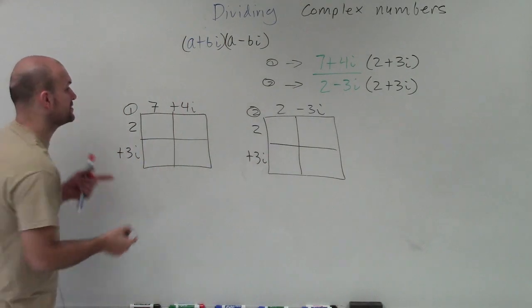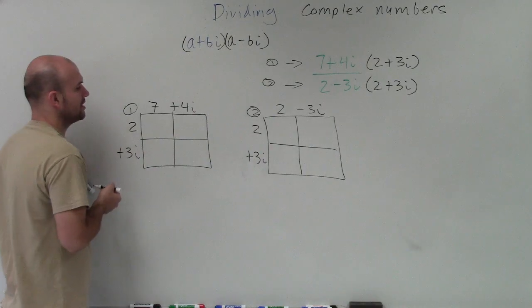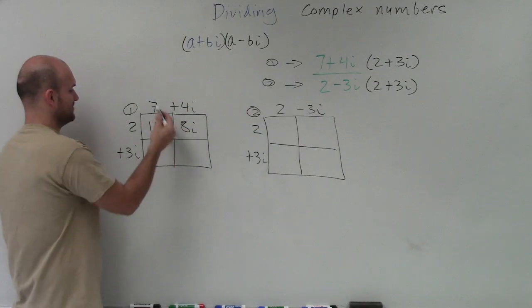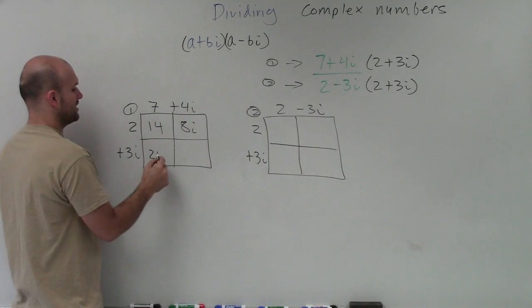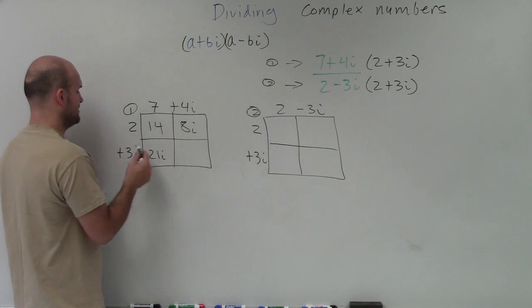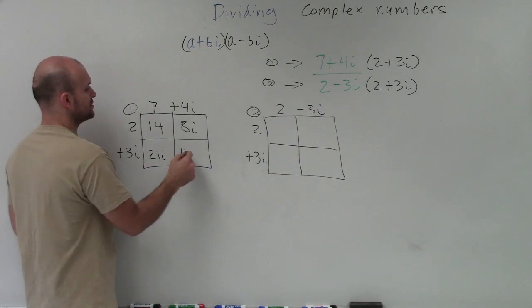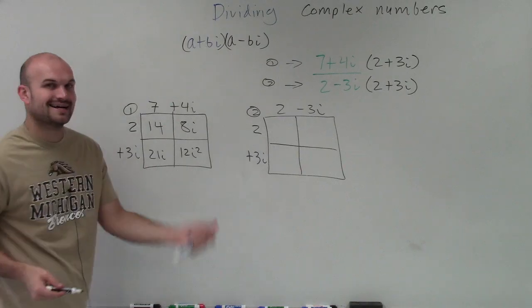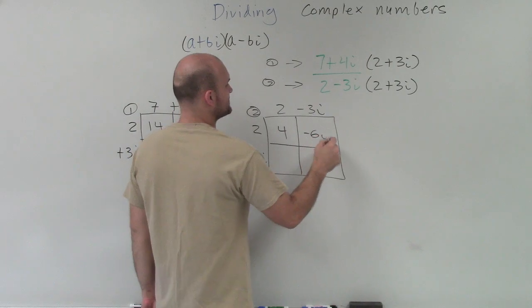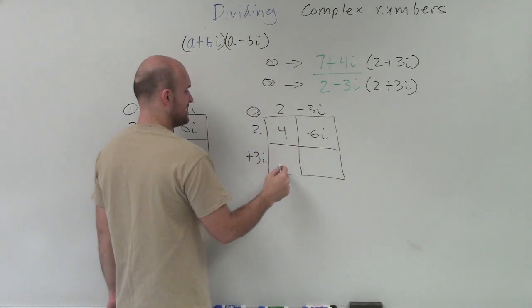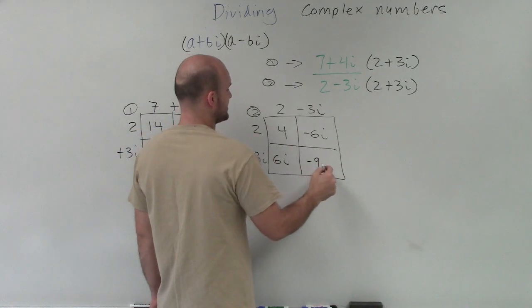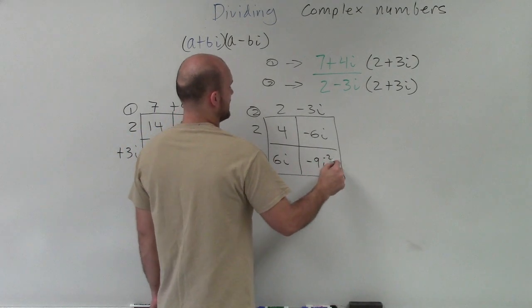All right. So now, what we're going to do is just find the product of each one of our little rectangles. 7 times 2 is 14. 2 times 4i is 8i. 7 times 3i is 21i. 3i times 4i is going to be 12i squared. I'll get to the i squared later. 2 times 2 is 4. 2 times negative 3i is negative 6i. 2 times 3i is positive 6i. And 3i times negative 3i is negative 9i squared.